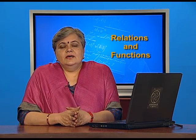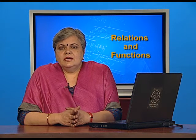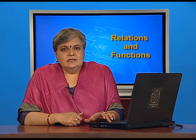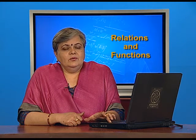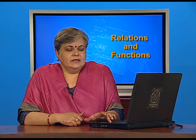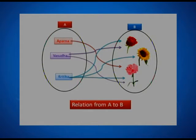Hello viewers. In our previous lesson we understood what we mean by relation from a set A to a set B. We saw that we can associate elements of a set A to another set B if we know how they are connected, how they are related. So Aparna liked carnation, Varsudan likes rose and carnation, and the third person may like all the three flowers.